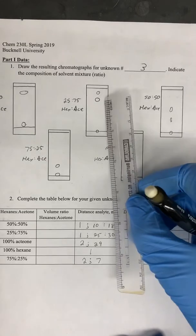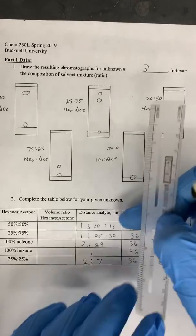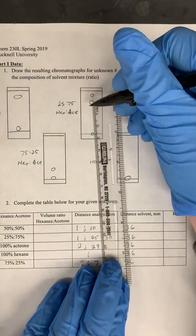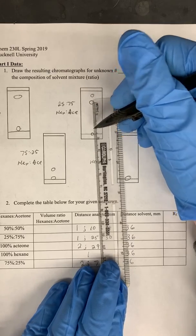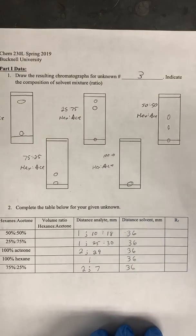And so you would hold your ruler in a way so that you measured the distance between this spot here, and we always do the center of the spot to the baseline, and then we would record that number down below.